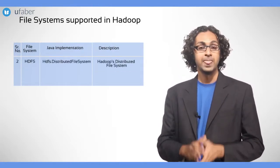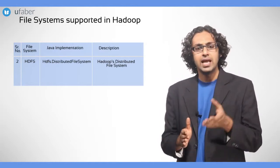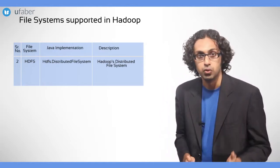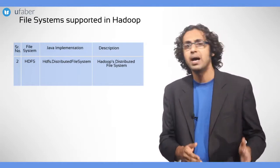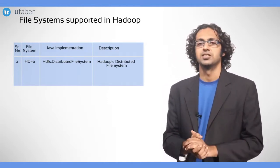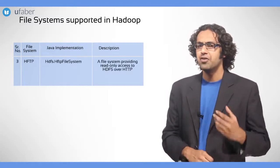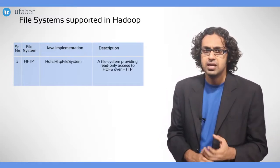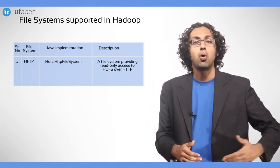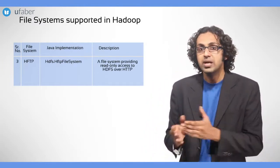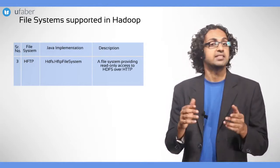HDFS is the default distributed file system of Hadoop. It means that while setting up a Hadoop system, if it does not specify a file system, then by default HDFS will be considered. HFTP: if you wish to access the HDFS from some machine using HTTP, then all the files are provided as read-only files. This implementation is known as HFTP.